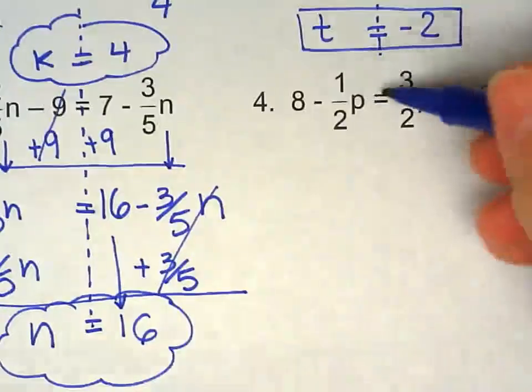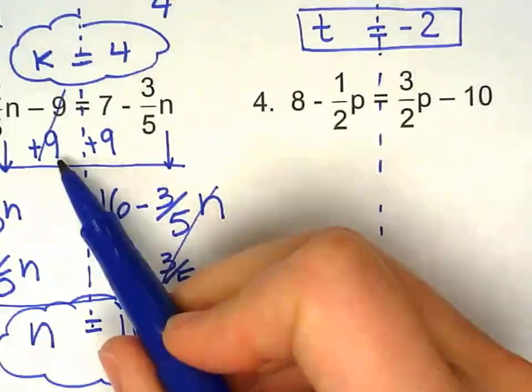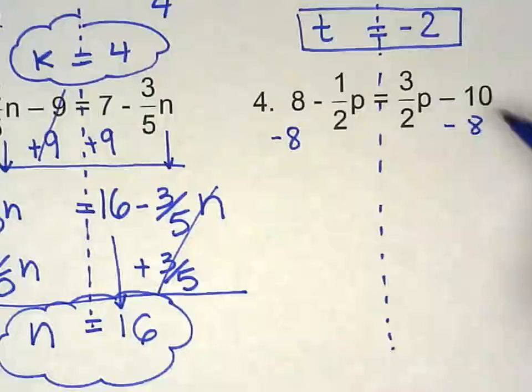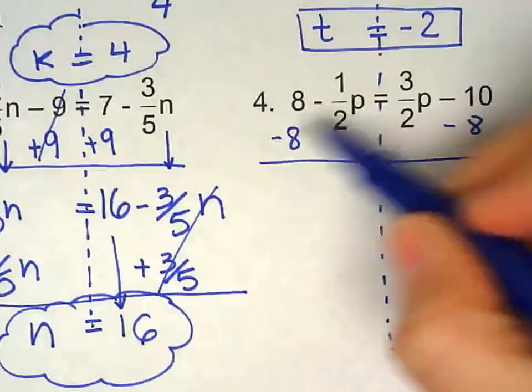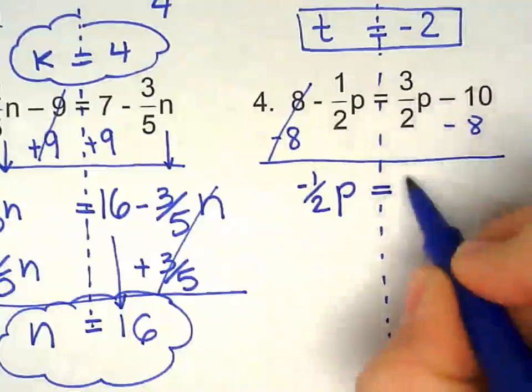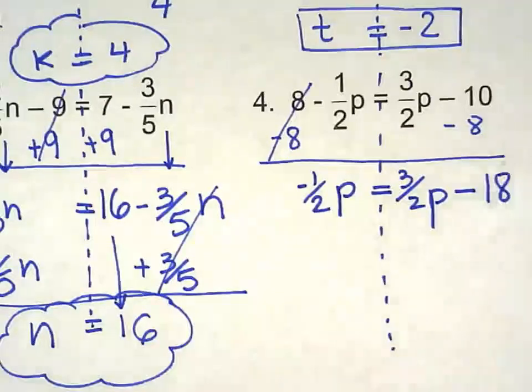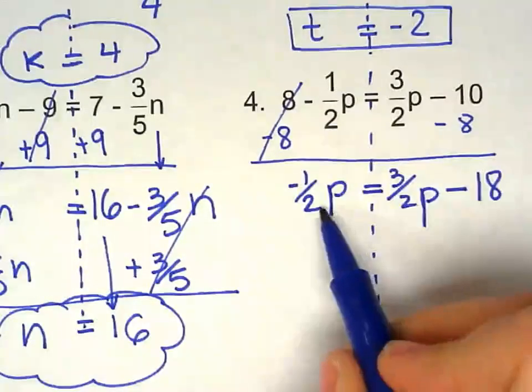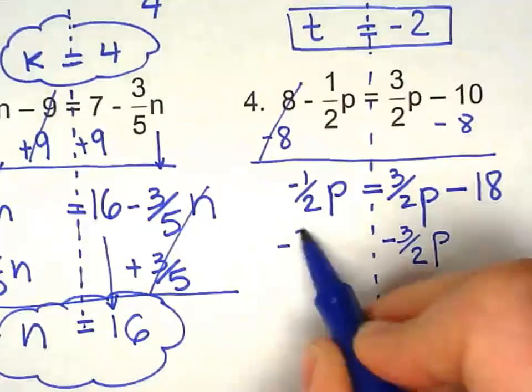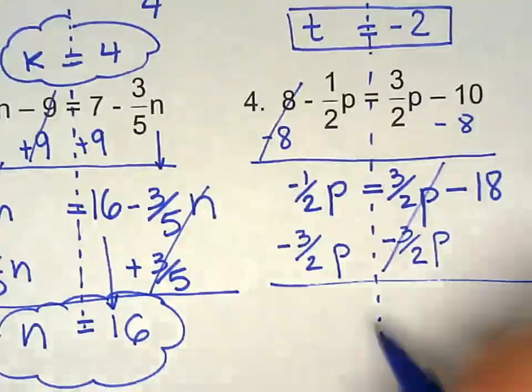One more with fractions. So I'm going to do the same thing I did for number 3. I get rid of the number first. So minus 8 on both sides. Line your numbers up. So you know what you're doing. Negative 1. Negative 1 over 2p. Bring the variable down here. Negative 10 minus 8. Now this variable must go on the left hand side. So you take away 3 over 2p. Take away 3 over 2p.